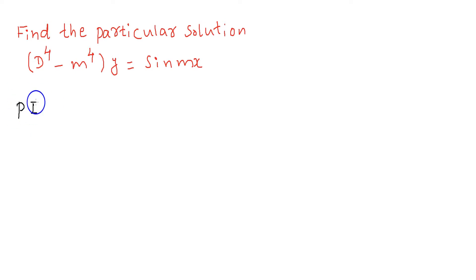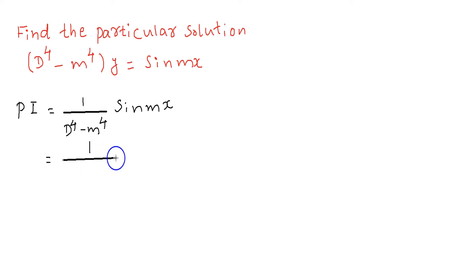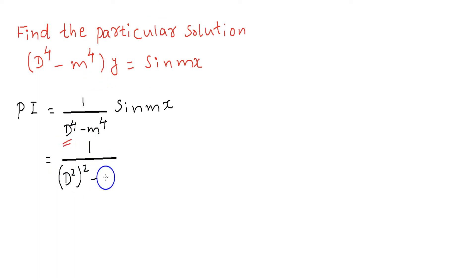The particular integral is equal to 1 by d raised to 4 minus m raised to 4 into sin mx, which can be written in the form 1 by (d squared) whole square minus m raised to 4 into sin mx.